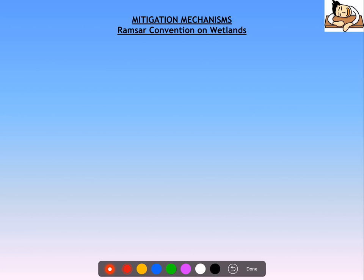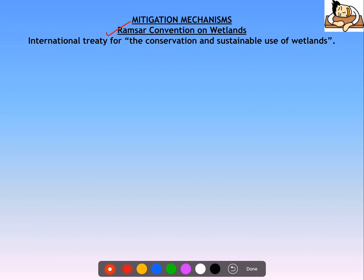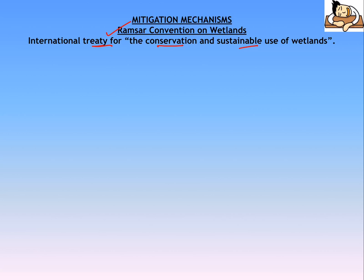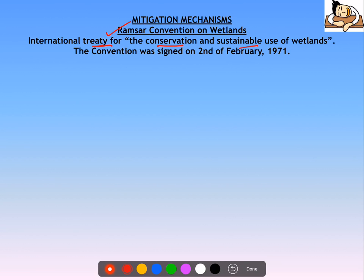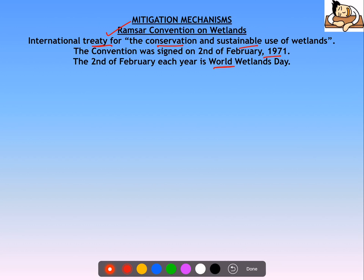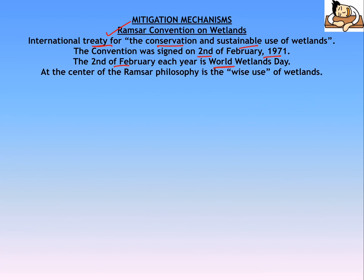One of the very important mitigation mechanisms is the Ramsar Convention on Wetlands. It is an international treaty for the conservation and sustainable use of wetlands. Ramsar is a place in Iran, located on the Caspian Sea. This convention was signed in 1971. World Wetlands Day is observed on 2nd February because this convention was signed on 2nd February 1971.